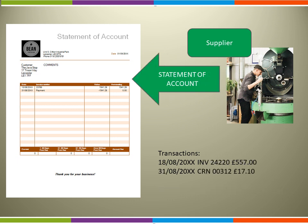In the month, there were a further two transactions. There was a second invoice for £557 on the 18th of August, and at the end of the month, on the 31st, there was a credit note for £17.10. Why not pause the video now whilst you complete the Statement of Account.